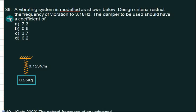A vibrating system is modeled as shown in the figure. Design criteria restrict the frequency of vibration to 3.18. So whatever the design you want, you want to use it for maximum value equal to 3.18. The damper to be used should have a coefficient of this. So first of all, we have to model this system.